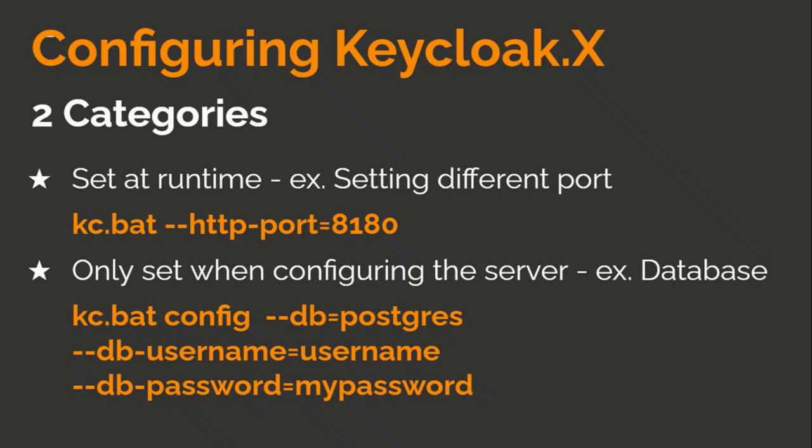To configure KeycloakX, there are two categories. One is runtime configuration — for example, if you want to set a different port like 8180, you use 'kc.bat --http-port=8180'. The other type is server configuration — for example, setting the database using 'kc.bat config --db=postgres --db-username=username --db-password=password'. You can quickly integrate Oracle, MySQL, or PostgreSQL databases this way.